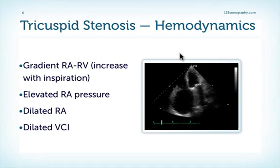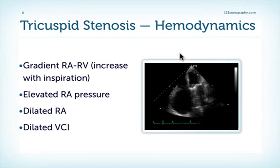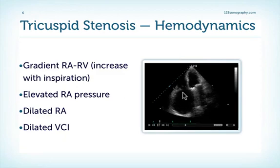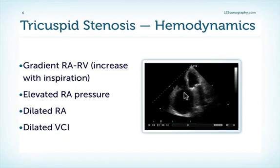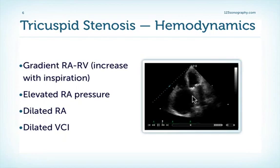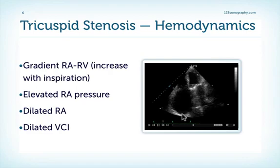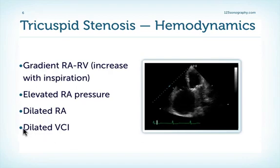There are also other indirect signs of tricuspid stenosis. To understand these, we have to look at the hemodynamics of tricuspid stenosis. The major problem in this form of valvular heart disease is the presence of a gradient between the right atrium and the right ventricle — obstruction to inflow. This elevates the pressure in the right atrium, and therefore we see an enlarged right atrium. This increase in pressure also translates down into the inferior vena cava, so we also see a large inferior vena cava.